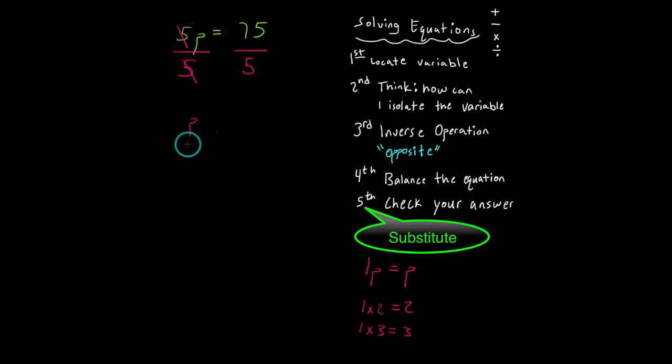So I'm left with p on this side, or you can think about it as five and five cancel out, and you're left with p. So I have p is equal to 75 divided by five. If you were to calculate that, you would find out that 75 divided by five is 15.